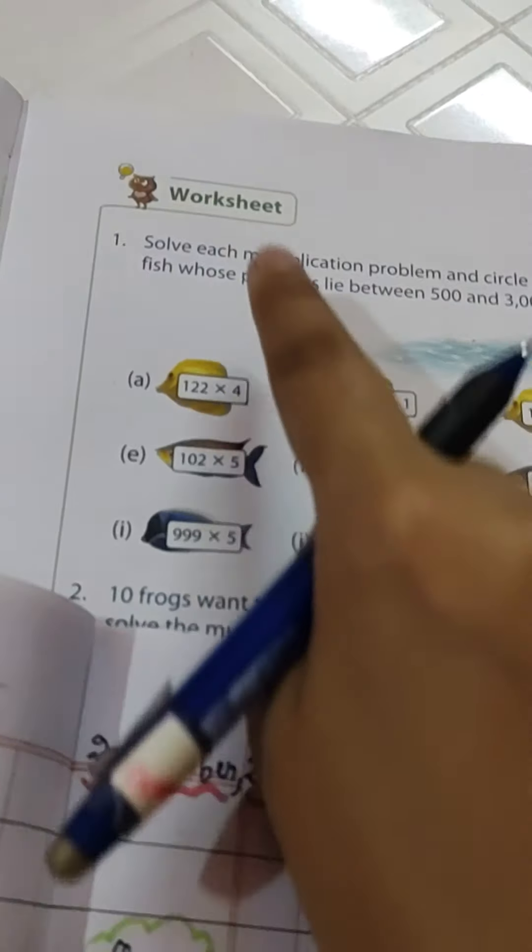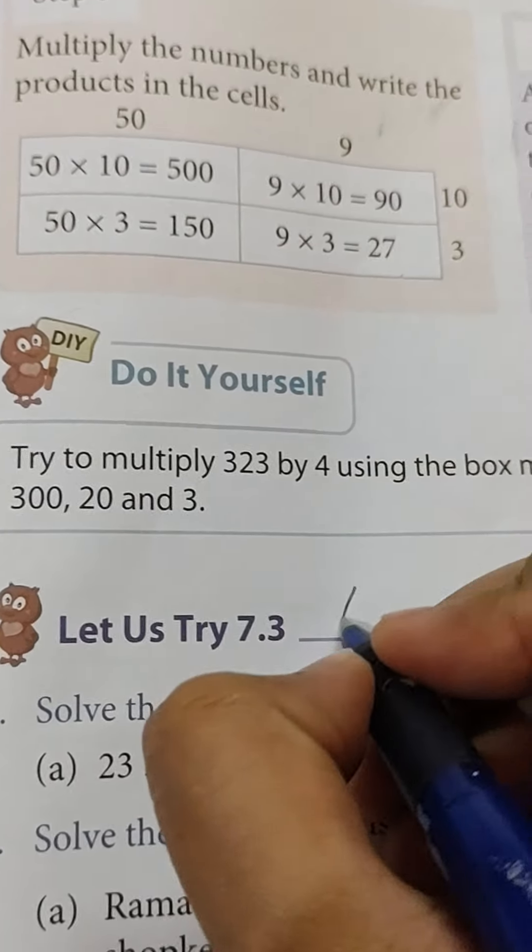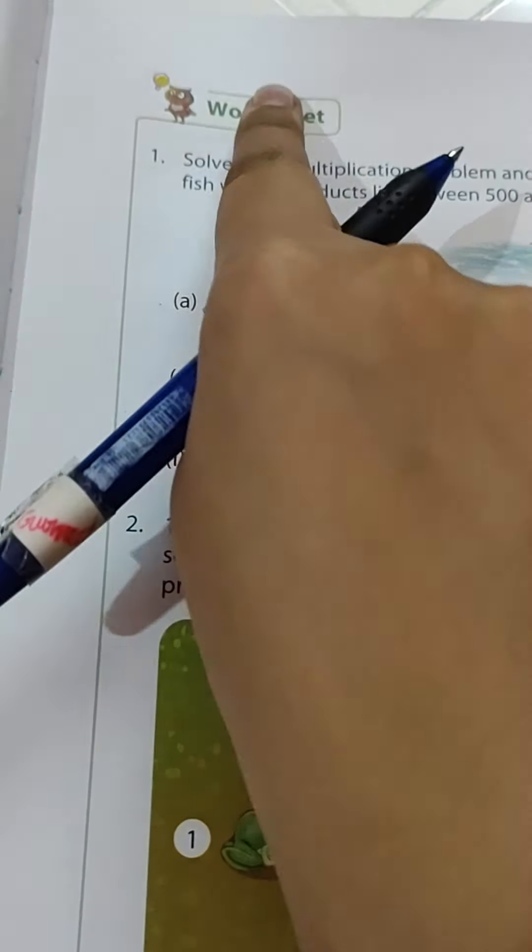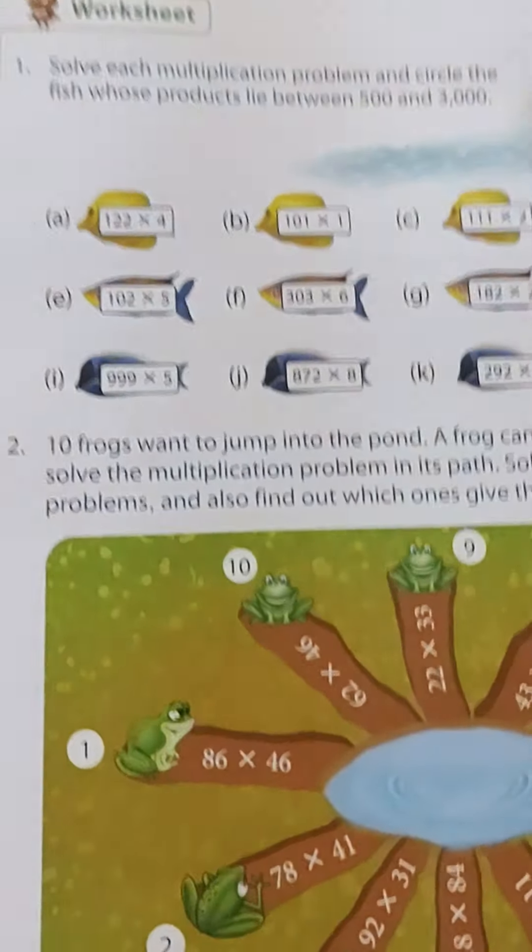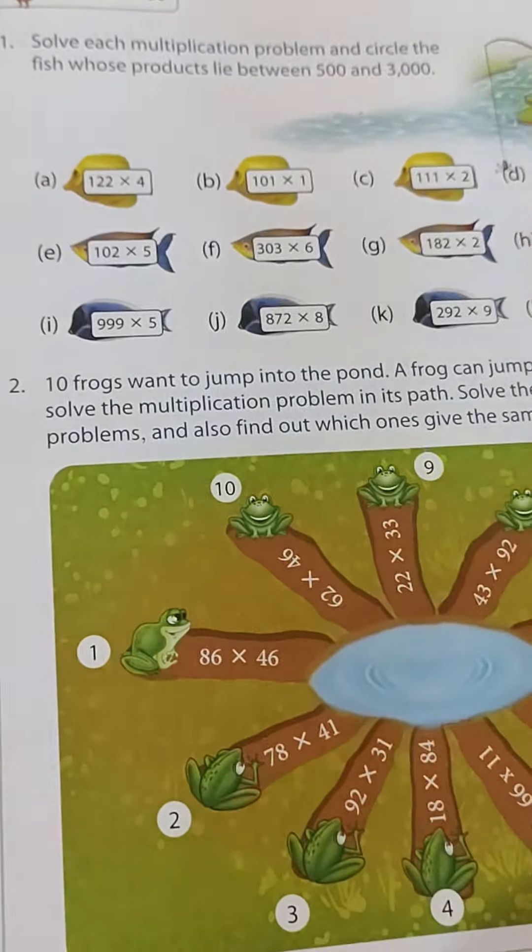Good morning everyone, today we will be doing worksheet 12. This time worksheet exercise 7.3, we will not be doing. Please put a cross on it, exercise 7.3 we will not do it. So now we will reach to worksheet 12 that we have done today.